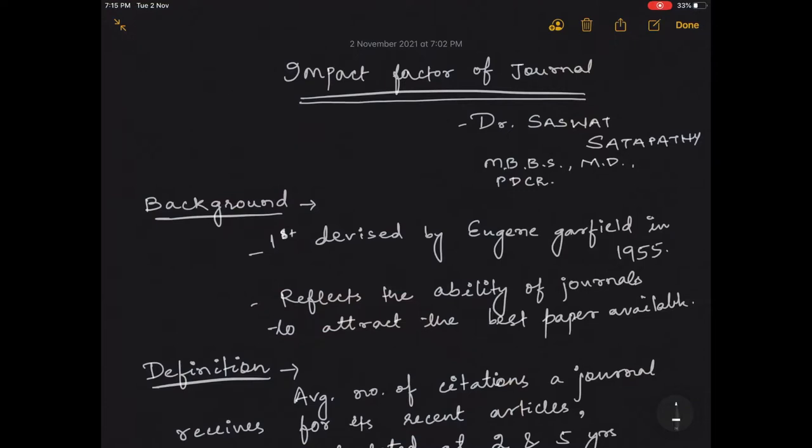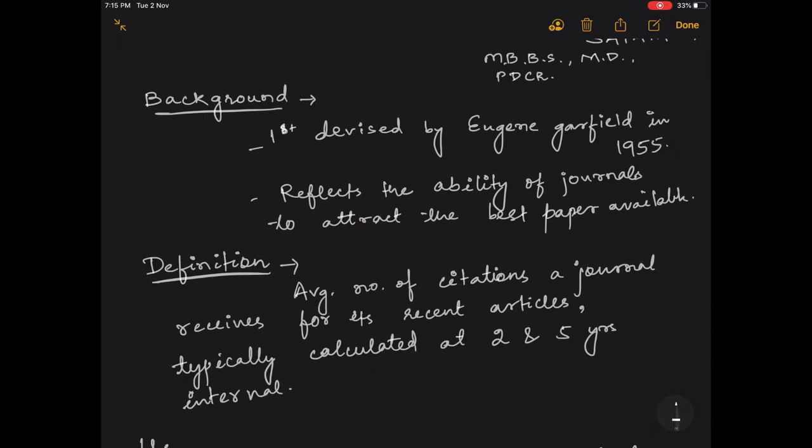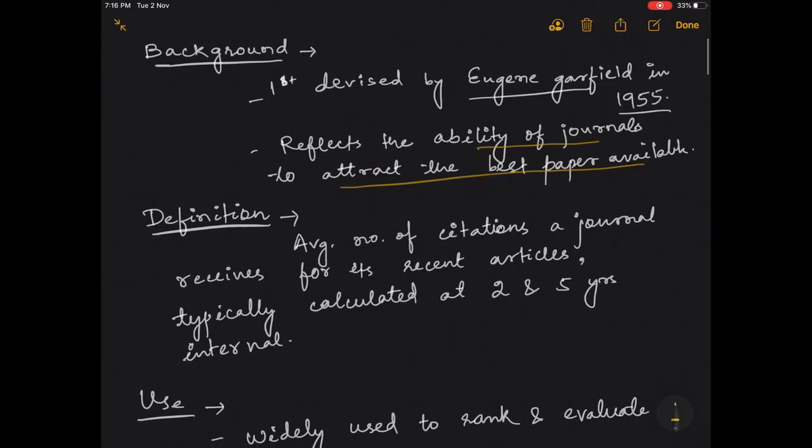Hello everyone, welcome to another lecture on my YouTube channel. Today's lecture will be on impact factor of a journal. First, coming to the background, it was first devised by Eugene Garfield in the year 1955 and it reflects the ability of journals to attract the best paper available. The definition of impact factor is the average number of citations a journal receives for its recent articles. Typically, the impact factor is calculated for every two and five years.